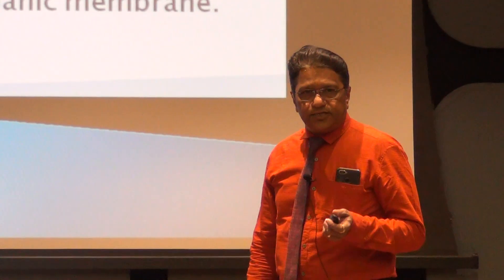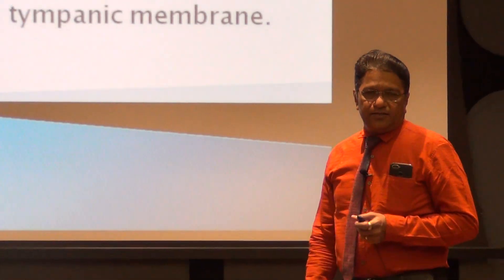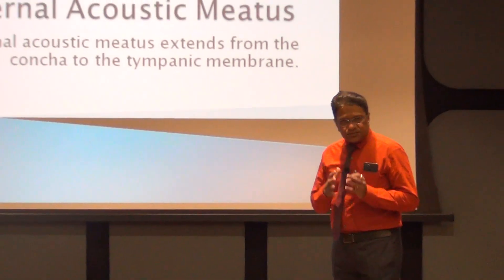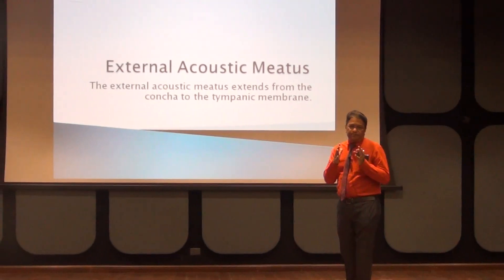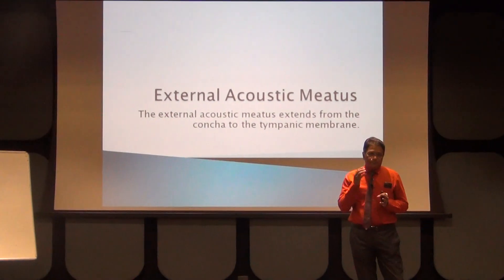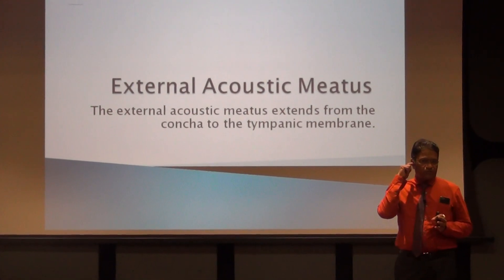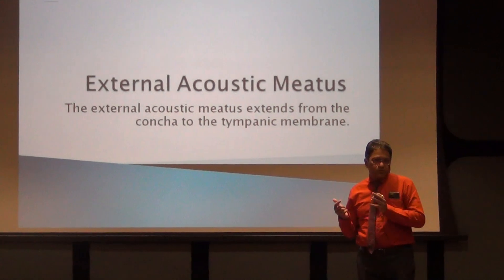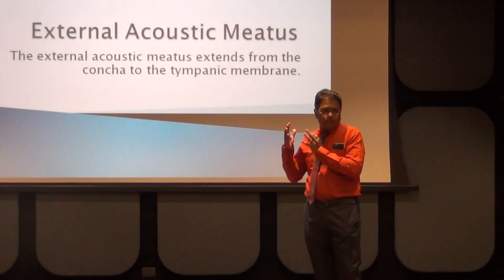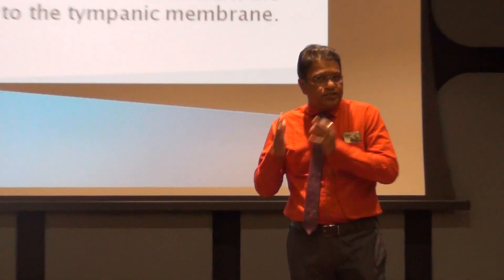What is the external acoustic meatus? The external acoustic meatus is a canal that leads from the concha of the pinna. This is the pinna and this is the concha - the floor of the concha. This canal leads from the floor of the concha till the tympanic membrane. This whole length of the canal is known as the external acoustic meatus.